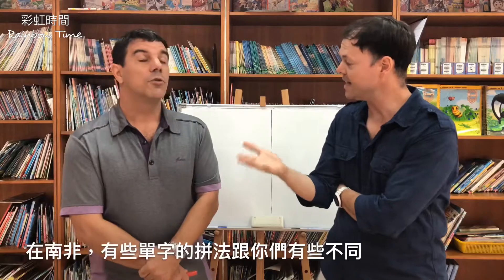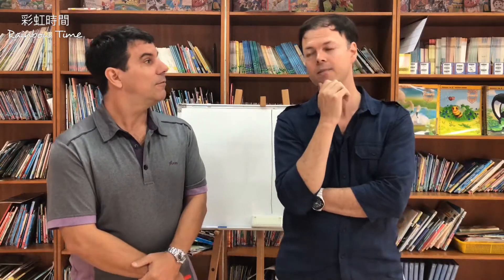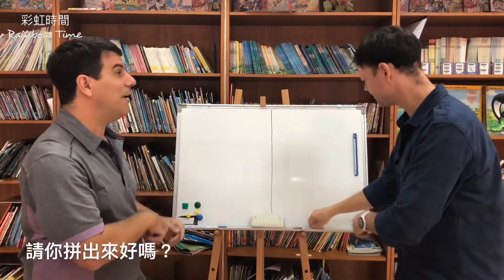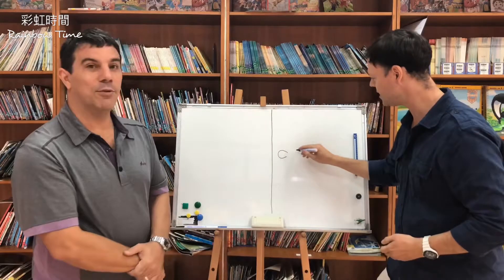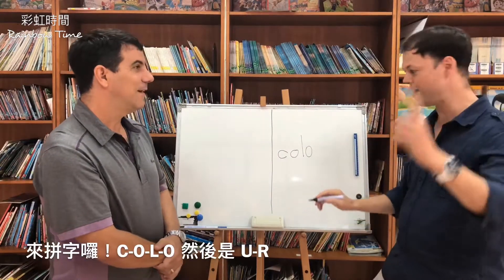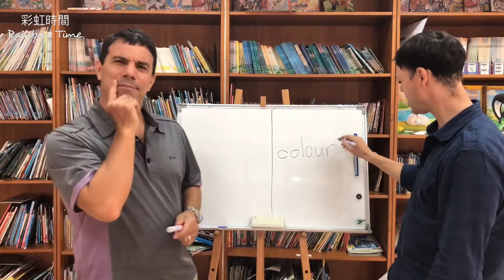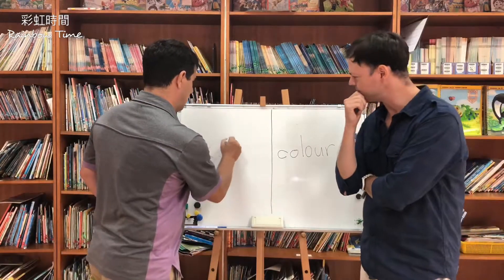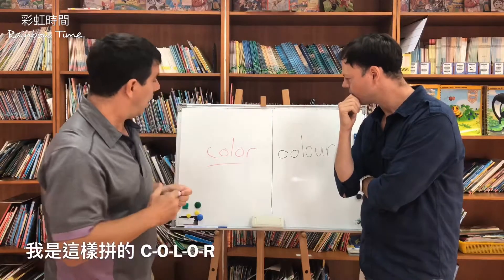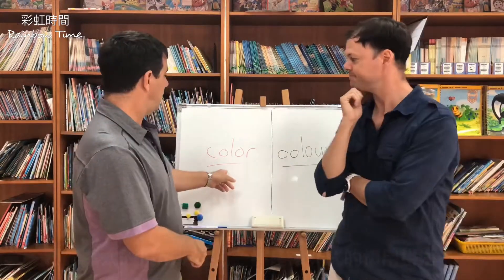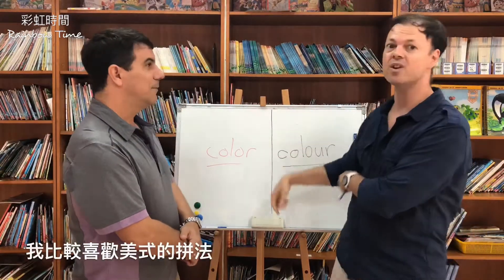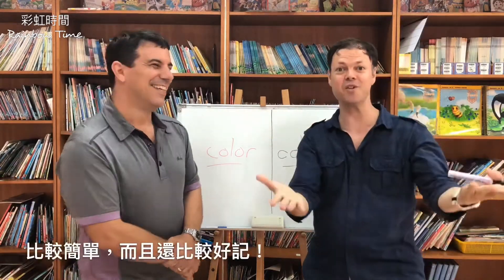We spell words differently in South Africa. For example, color. How do you spell color? C-O-L-O-U-R. Would you write it down? Okay, here we go. C-O-L-O... and here we have U-R. That seems very strange because color is not spelled that way. C-O-L-O-R. Both ways are right — this way or that way, American or South African. I like the American way of spelling because it's much simpler, easier, and easier to remember.